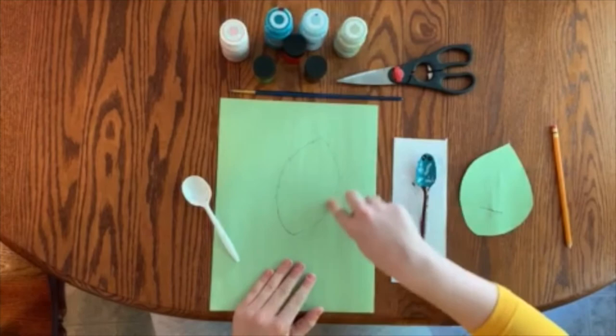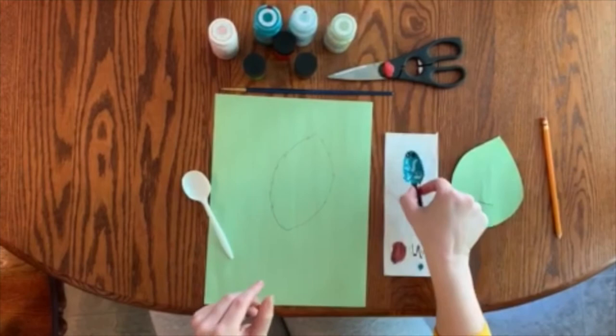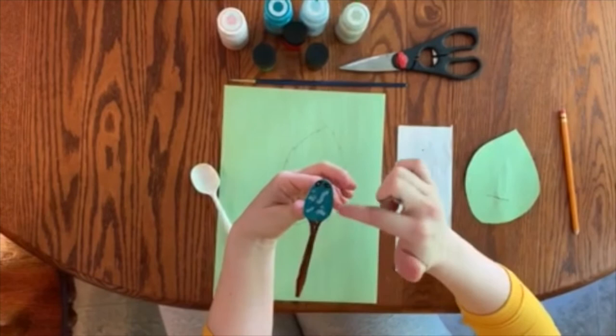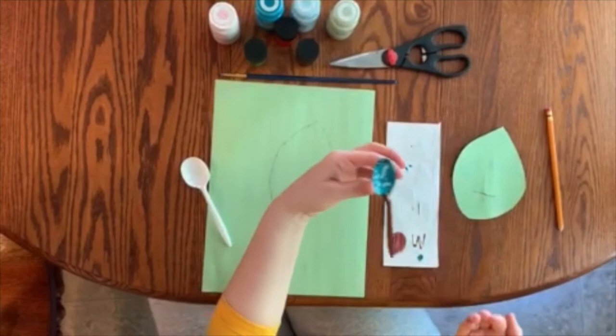And then you're going to take your spoon and paint it. So I've already painted this spoon so I can let it dry. I have my bug here and the long end of the spoon is the stem because it's going to show down out of your leaf.